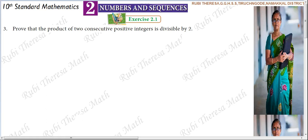Prove that the product of two consecutive positive integers is divisible by two. So, this is the third sum. To prove, we have to prove that the product of two consecutive positive integers is divisible by two.